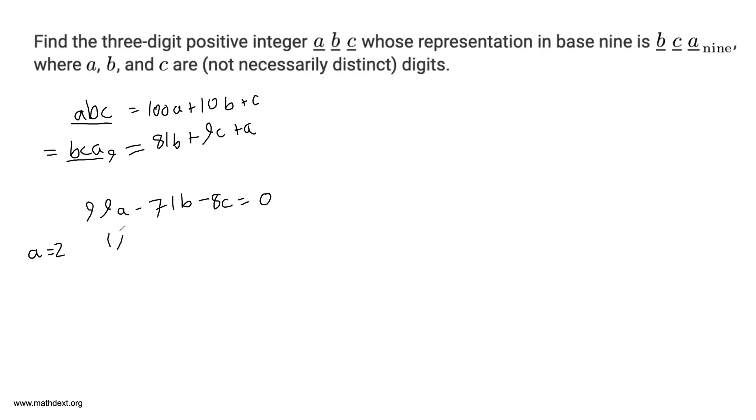You have 99 times 2, 198 minus 71B minus 8C is equal to 0. Well, same argument holds as before. Both 71B and 8C will be less than 198 because neither of them can be negative. 198 is 71B plus 8C.